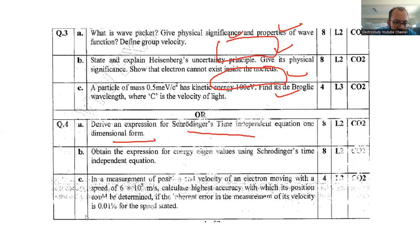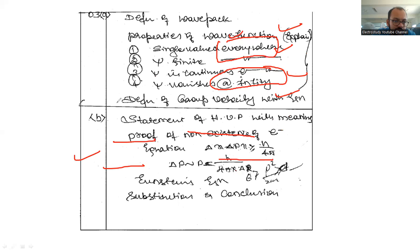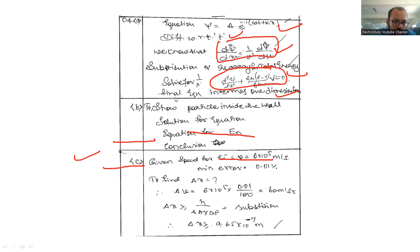Question number 4b: obtain the expression for energy of eigenvalues using Schrödinger time independent equation. These are the points you need to add in the exam. Proper equation, conclusion, everything should be added.